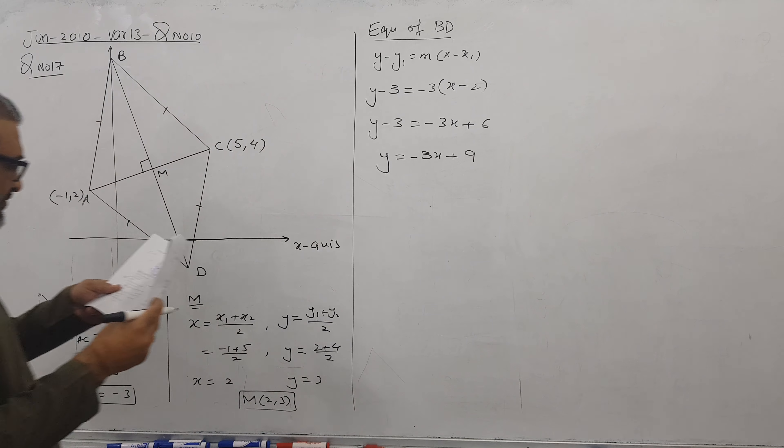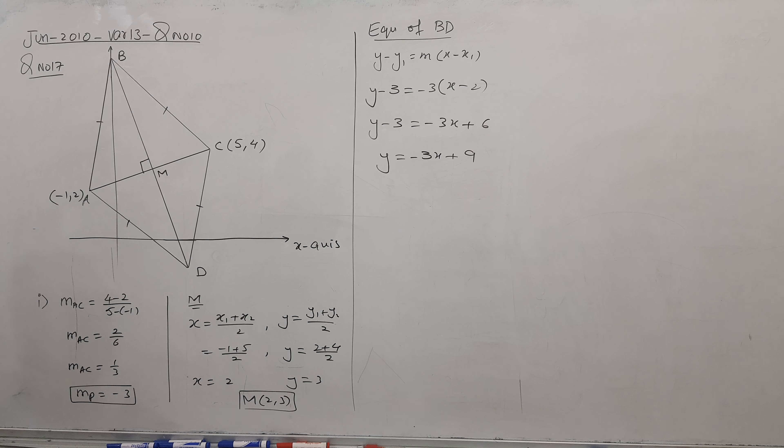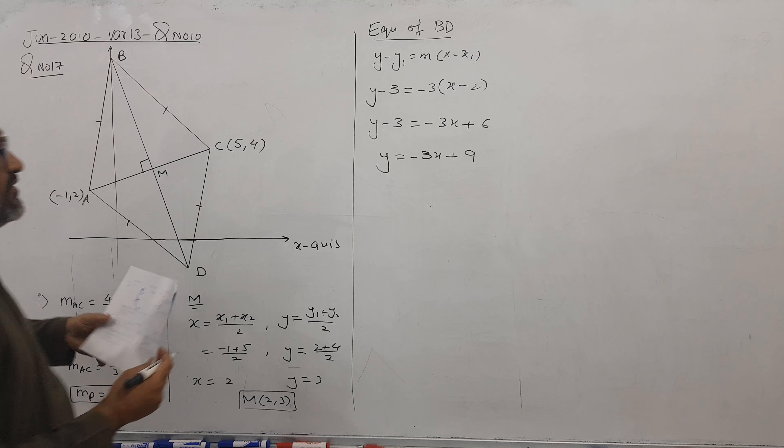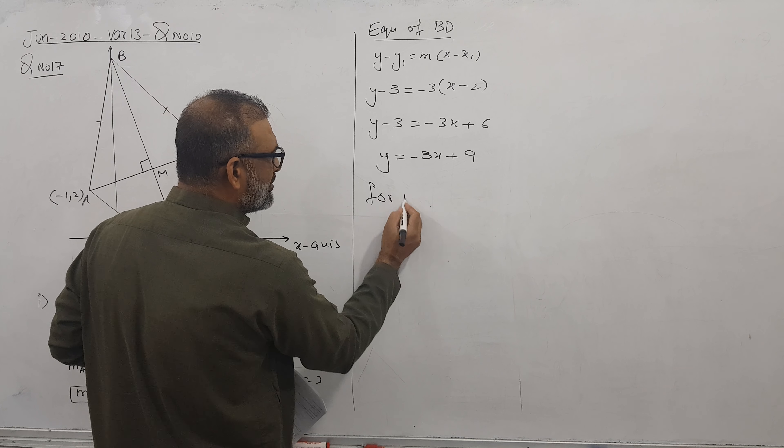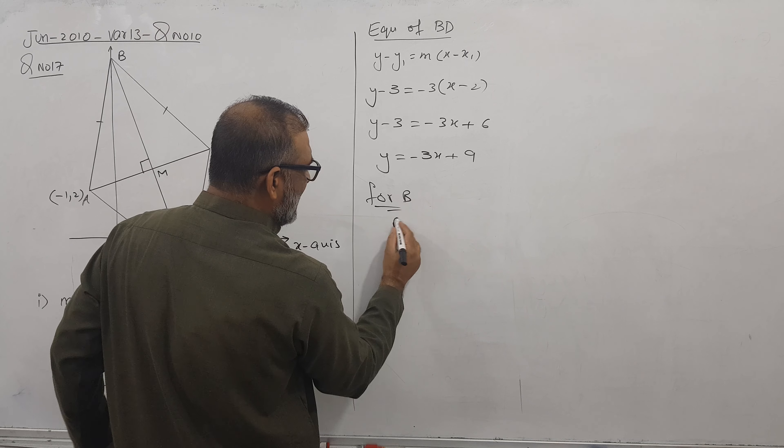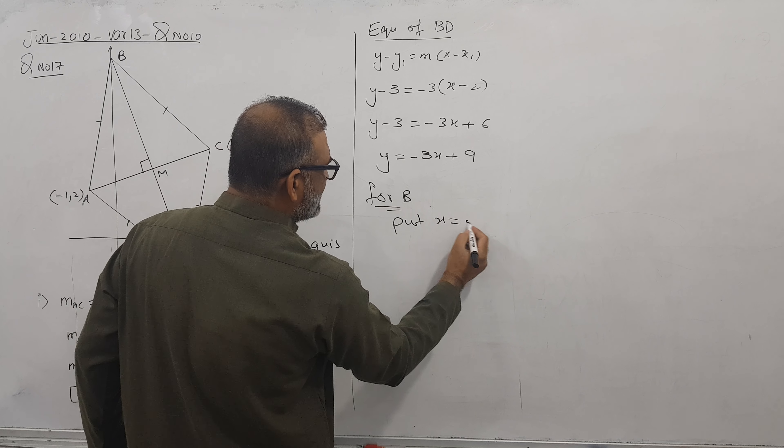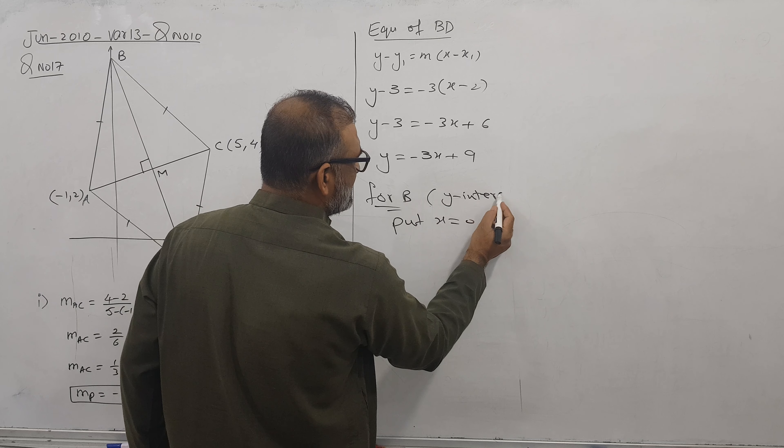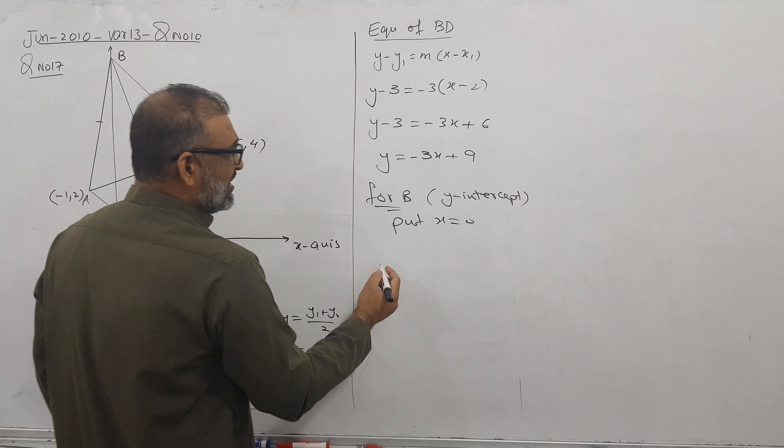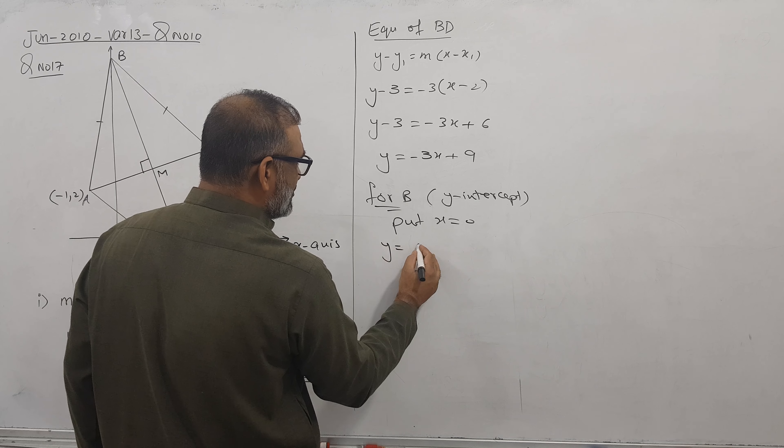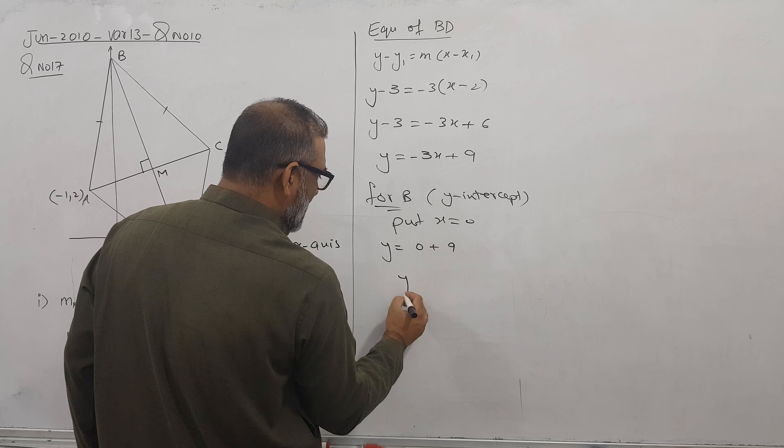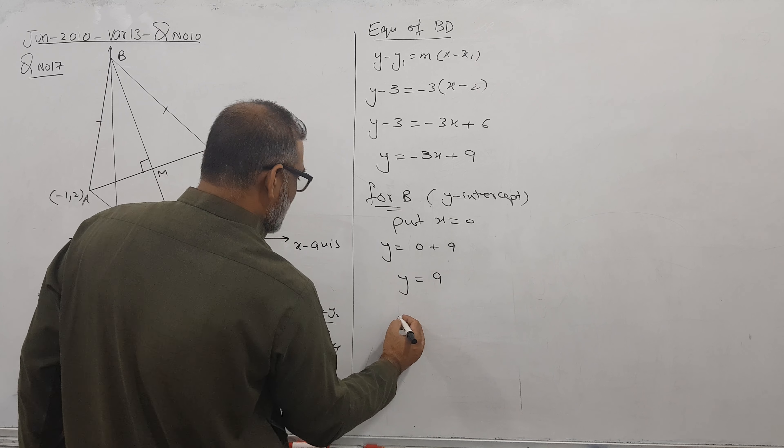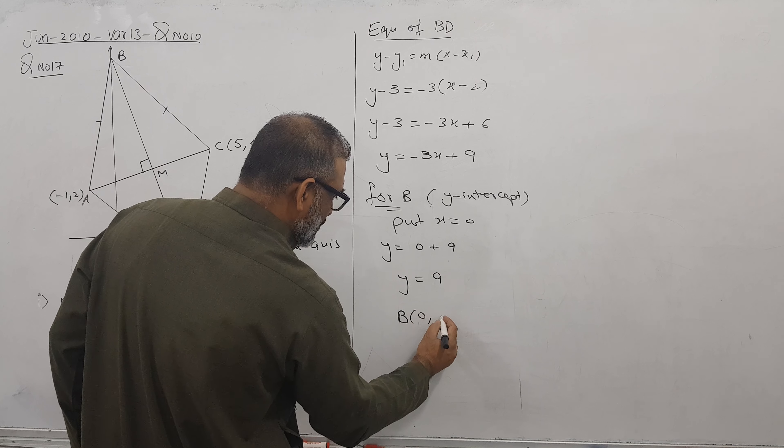This is the equation of perpendicular bisector. Now you know this line is cutting the y-axis. So for B, put x equals 0, because it is the y-intercept. When I put x equals 0, y answer is coming 9. So coordinates of B is 0 comma 9. Alhamdulillah, very easy.